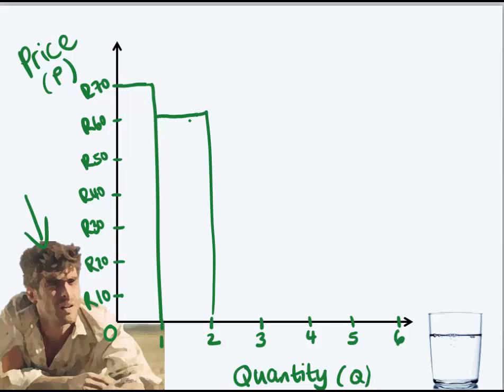The third glass of water, now he's not as thirsty anymore but he still wants water, and he says 'I'll be willing to pay 50 Rand for a third glass of water.' Now his thirst or his demand for water decreases because the more water he drinks, the less thirsty he gets. Now the fourth glass, he still wants water so he says 'I'm not going to pay 70, 60, 50, but I'll pay 40 Rand for a glass of water.'